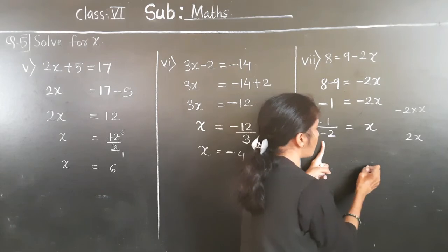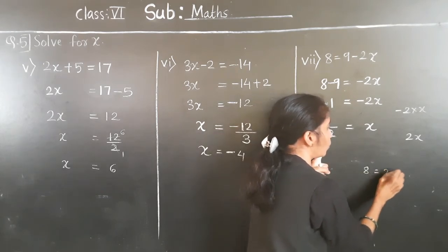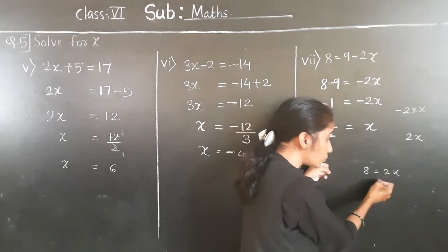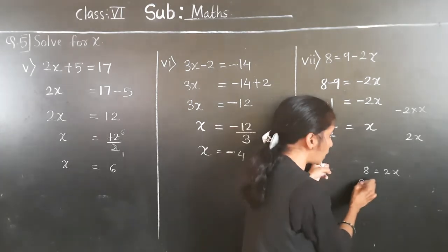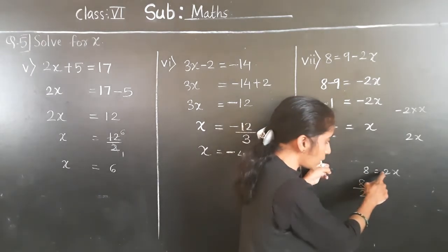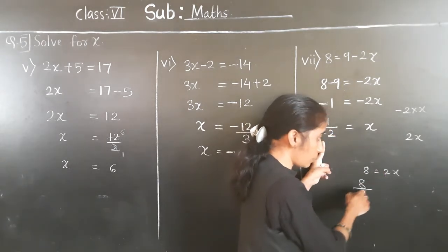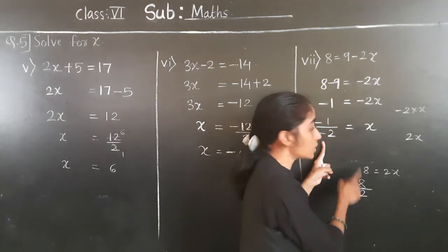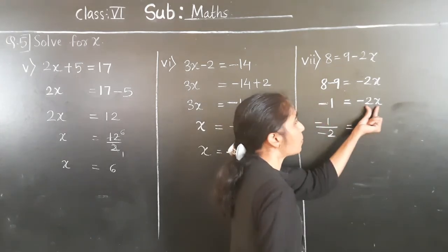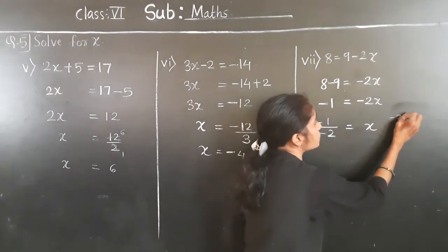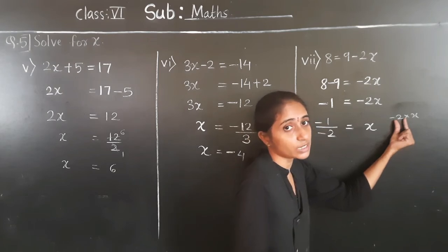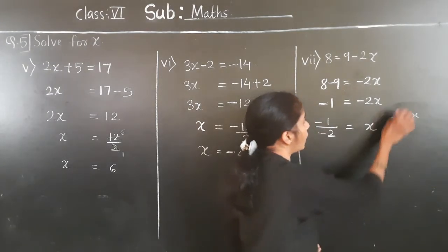For example: if 8 is equal to 2x, you transfer 2 to the left hand side — it becomes divided by 2. You don't change the sign because the operation is multiplication. Similarly here: minus 2 multiplied by x, between them the operation is multiplication, so if we transfer to the left side it becomes divided by minus 2.